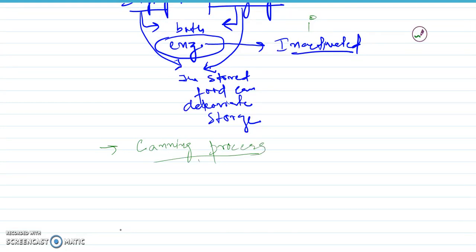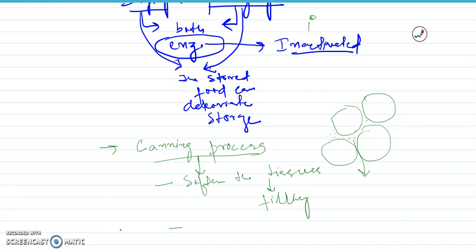In canning, blanching is done to soften the tissues. This aids in filling of fruits and vegetables. Further, the air occupied in the intercellular space of cells is removed by blanching, which helps maintain the head space.